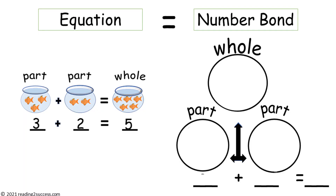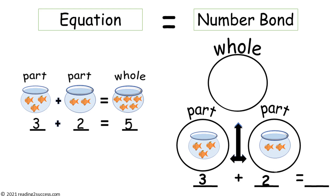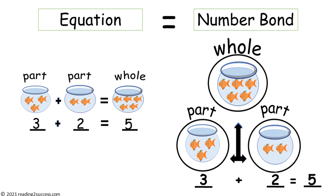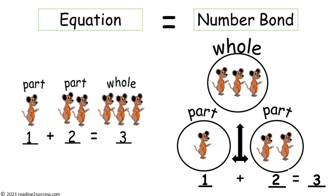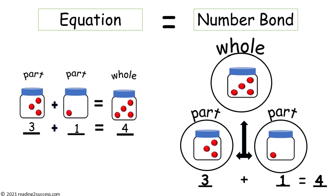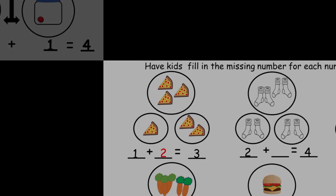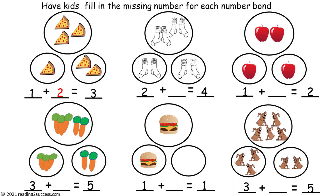Our number bonds will follow along with our equations. Three fish plus two fish equals five fish. Just like our addition equation, our number bond shows the same. One mouse plus two mice equals three mice. Three dots plus one dot equals four dots. Now have kids fill in the missing number for each number bond. The first one has been done: one plus the missing number two equals three, so one slice of pizza plus two slices of pizza equals three slices of pizza.